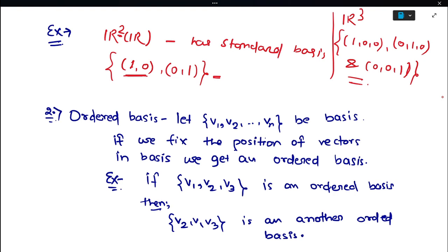Now, what is an ordered basis? Let {v1, v2, ..., vn} be a basis B. If we fix the position of vectors in a basis, we get an ordered basis. If we change the position of v1, we get another basis.